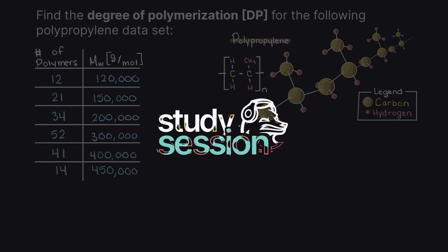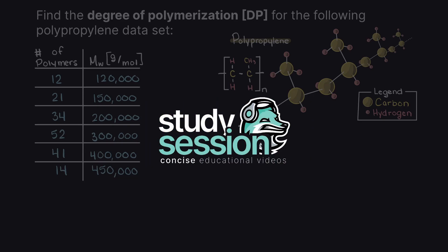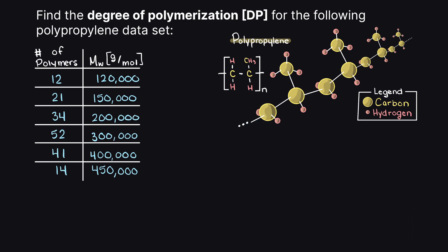Hey everyone, in this video we are going to be going through the following example problem where we are asked to solve for the degree of polymerization for the following polypropylene dataset. Our dataset here is simply telling us the length of all of our polypropylenes in our sample.